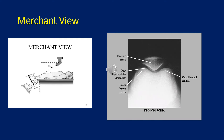One of the most important views that can be ordered is the merchant view. It is perhaps the most forgotten view, because most doctors would just order an AP and a lateral view. However, the merchant view shows the patellofemoral joint very clearly. You can see here that the knee is bent 45 degrees and the beam comes from the top down to really isolate that patellofemoral joint.